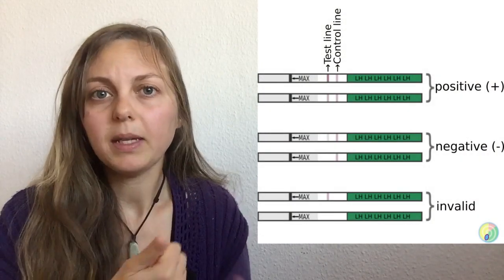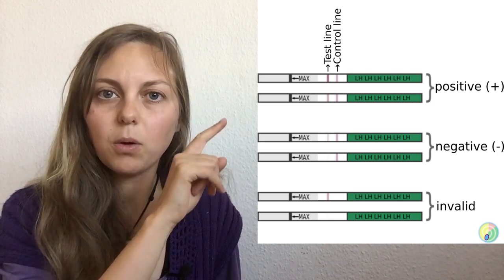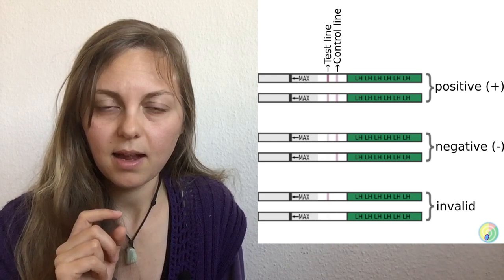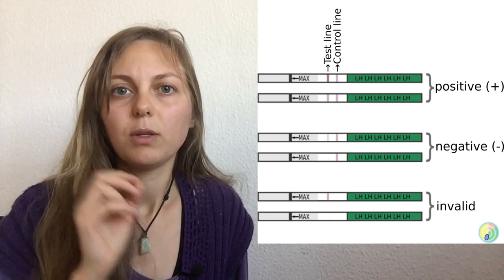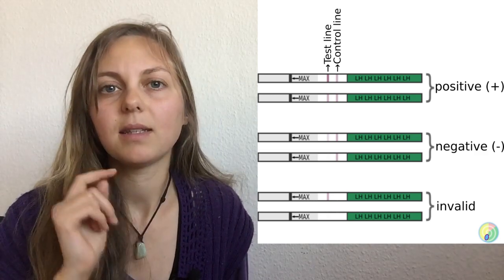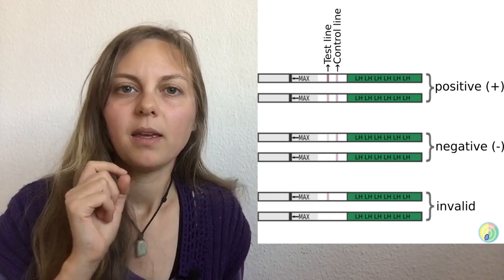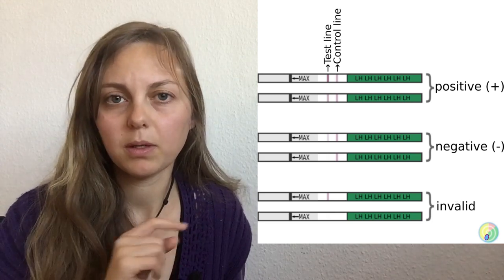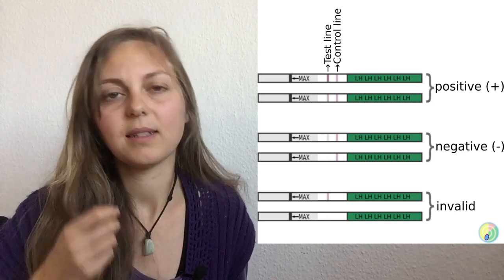In this picture you can see what an ovulation test looks like. If you have a positive test, the control line is there and also a second test line. This test line could be stronger than the control line or they could be the same intensity. If your test is negative, you have a control line but the test line is faint or absent. If the result is invalid, there is no control line — in that case you can do another test and try again.